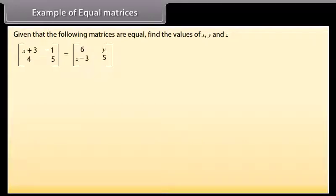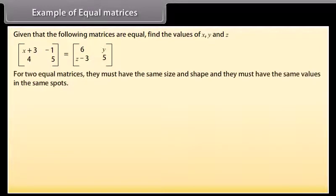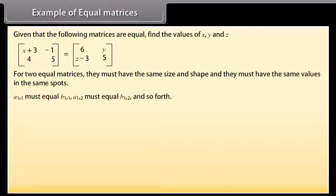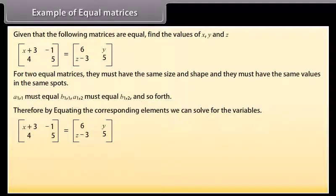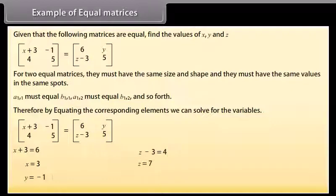Example of equal matrices: given that the following matrices are equal, find the values of X, Y, and Z. For two equal matrices, they must have the same size and corresponding values. By equating corresponding elements: X + 3 = 6, so X = 3; Y = -1; Z - 3 = 4, so Z = 7.